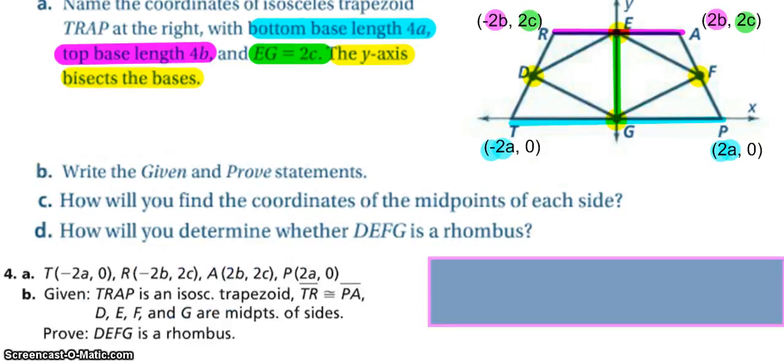All right, so for part B we want to write given and prove statements. So it's easy to know that we are talking about an isosceles trapezoid, we have parallel sides, and we know midpoints because we've been told all that. We would like to prove that it is, or that the structure made by the midpoints is a rhombus.